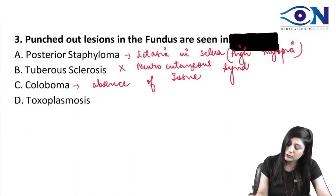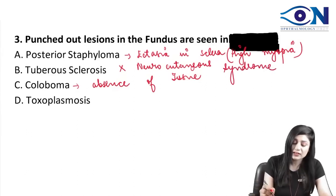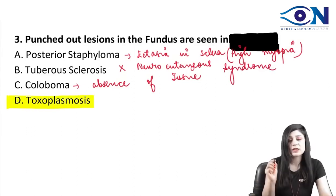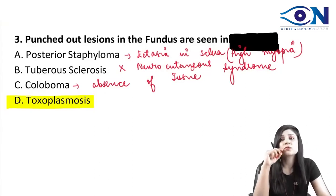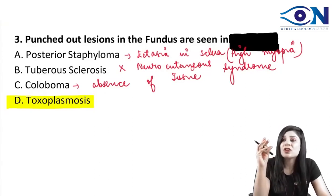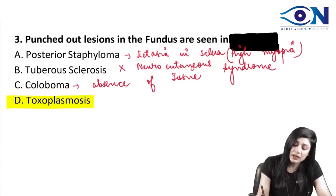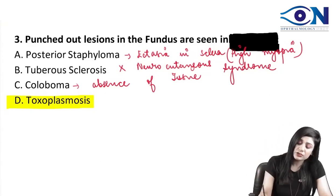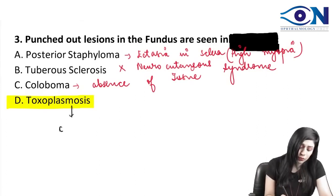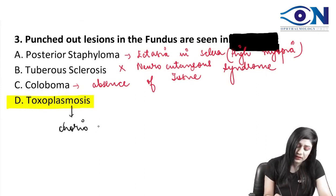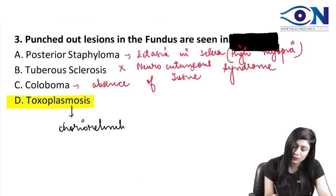Therefore, the answer to this question is toxoplasmosis. 'Punched out lesions' is basically a term used for a patch of chorioretinitis — it is used mainly for the chorioretinitis scar.